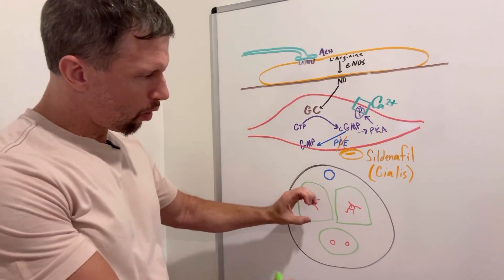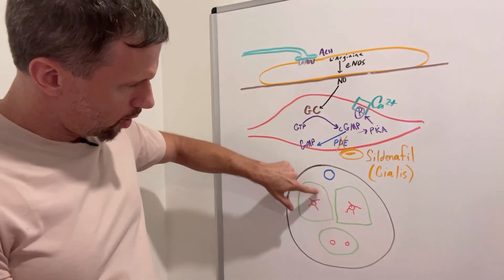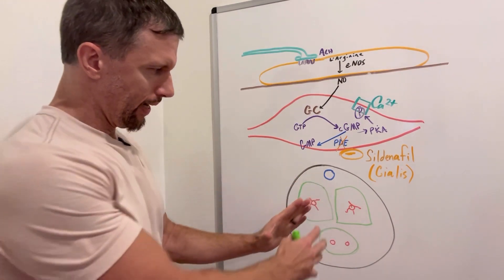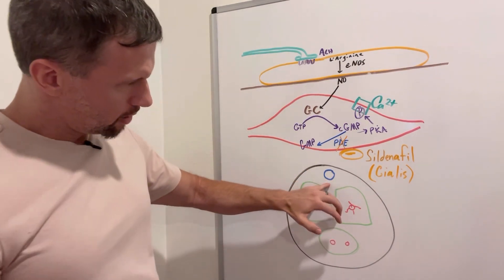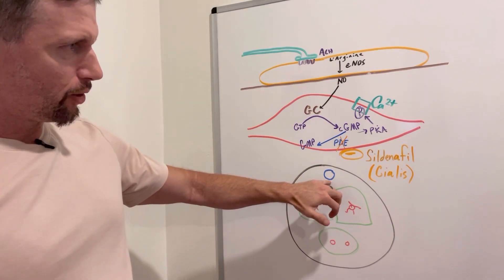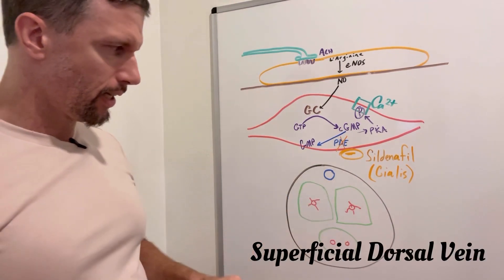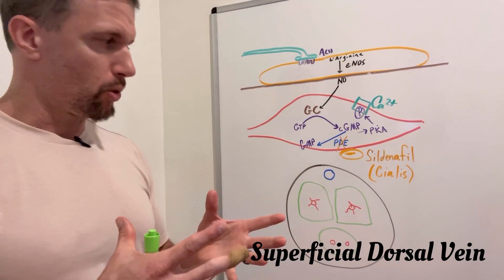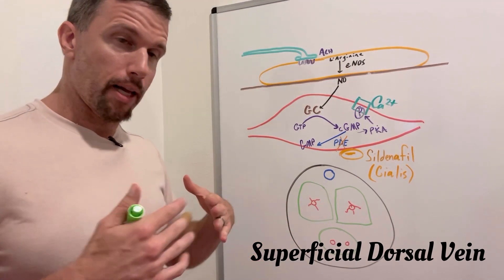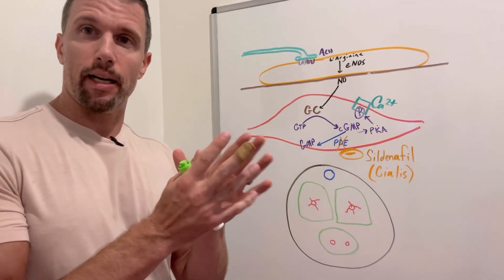And when these arteries open up, blood engorges this spongy tissue and it swells, and it actually compresses the superficial dorsal vein. So you get this good strong erection between lots of blood coming in and then it gets stuck there; it can't go out.